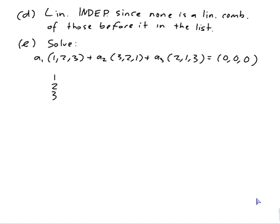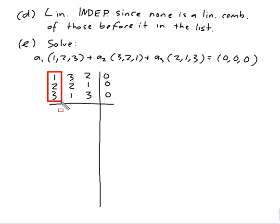1, 2, 3, 3, 2, 1, 2, 1, 3, 0, 0, 0. So I would want an identity column there with a 1 here and zeros below it. I already have a 1. So I just need to do my row operations to get the zero. So that would be my new row 2 would be row 2 minus 2 of row 1. My new row 3 would be row 3 minus 3 of row 1.